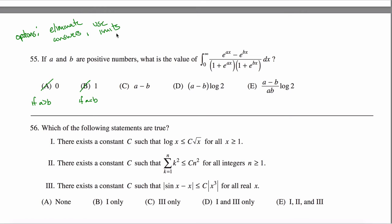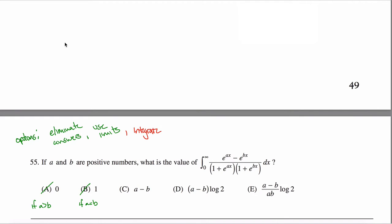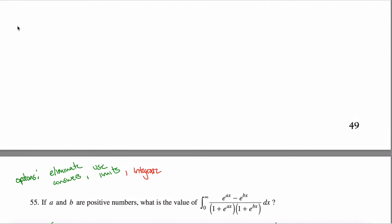Another option would just be to integrate — bite the bullet, do the work. Maybe you've gone really fast through everything else and you want to integrate. For the sake of studying, you want to see how you would integrate something like this. So let's figure out the integral from zero to infinity of E raised to the AX power minus E raised to the BX power, divided by one plus E to the AX times one plus E to the BX.